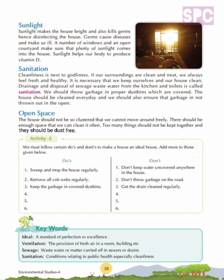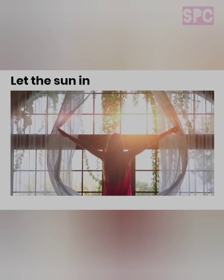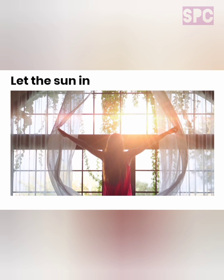Let's move on to the next feature of an ideal house: sunlight. Sunlight makes the house bright and also kills germs, hence disinfecting the house. Germs cause diseases and make us ill. A number of windows and an open courtyard make sure that plenty of sunlight comes into the house. Sunlight helps our body to produce vitamin D. Sunlight is recognized as a natural disinfectant as its heat and light kill the germs growing in different corners of the house along with brightening the rooms. Sunlight is also a great source of vitamin D which is required for healthy bones and teeth. Exposing our body to the natural morning sunlight helps our body get its daily dose of vitamin D.